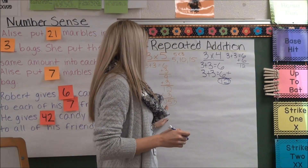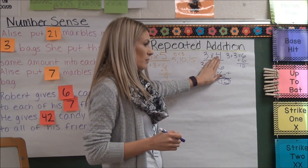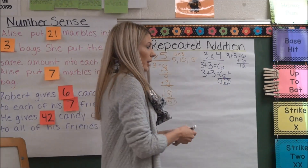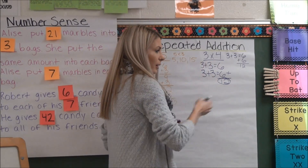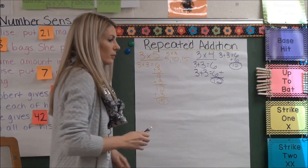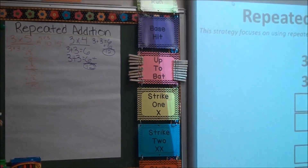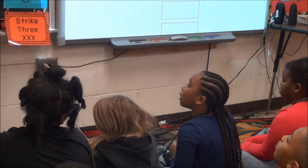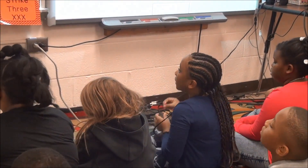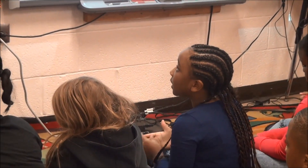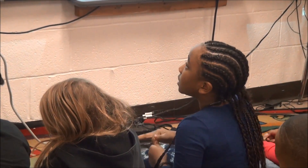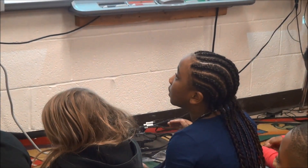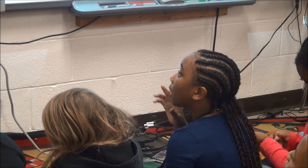If we did 3 times 5 and got 15, and here we have 3 times 4 and you're telling me it's 12, how do these relate to one another? Shariah: They relate to each other because if you count by 3s — 3, 6, 9, 12, 15 — since it says 3 times 5 it's going up one, and if you do 3 times 4, it's just going down one.